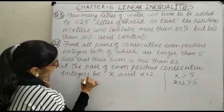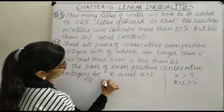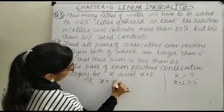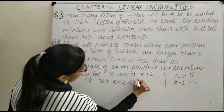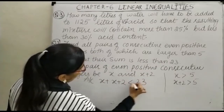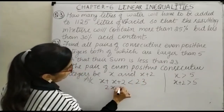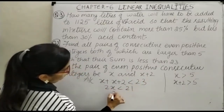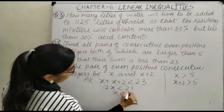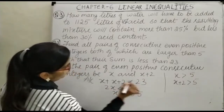The sum condition gives us: X plus (X plus 2) is less than 23, so 2X plus 2 is less than 23, giving 2X less than 21, and therefore X less than 10.5.